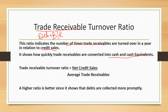The formula for trade receivable turnover is net credit sales divided by average trade receivable. We use net credit sales because obviously when you are selling goods on credit, then only the question of debtors and bills receivable arises. If you are selling goods on cash, there is no question about debtors and BR. So this ratio is calculated on the basis of net credit sales divided by average trade receivable.